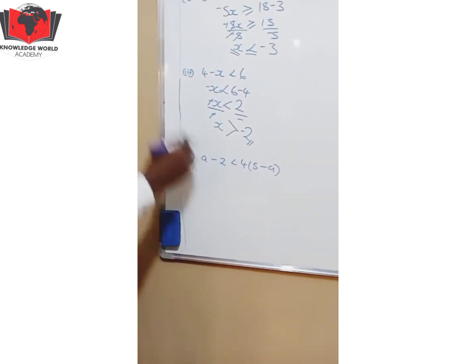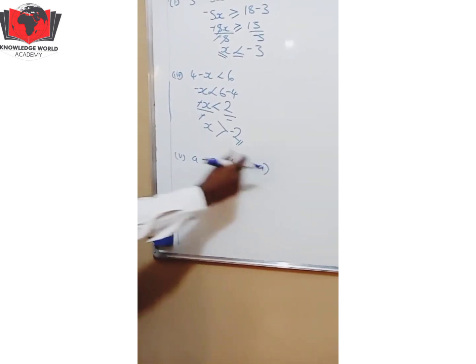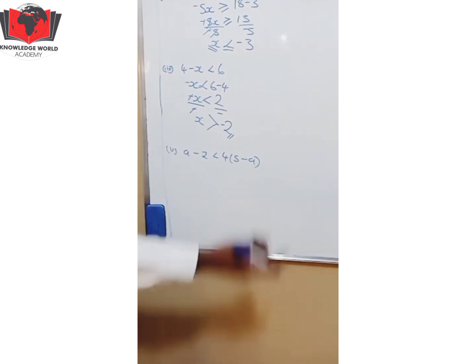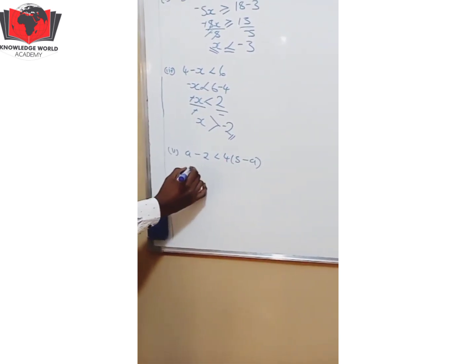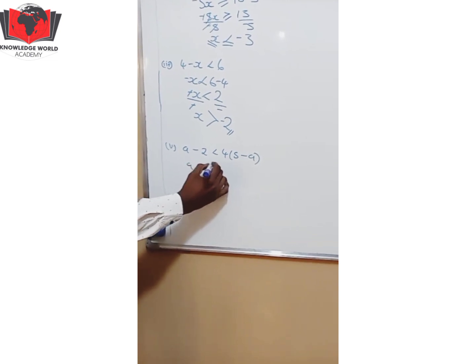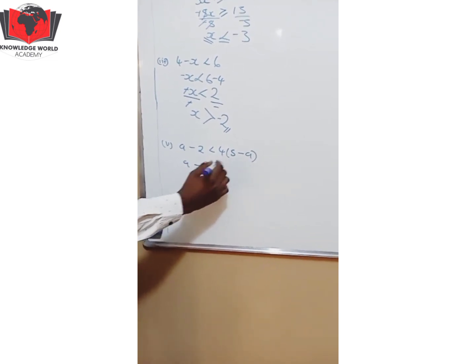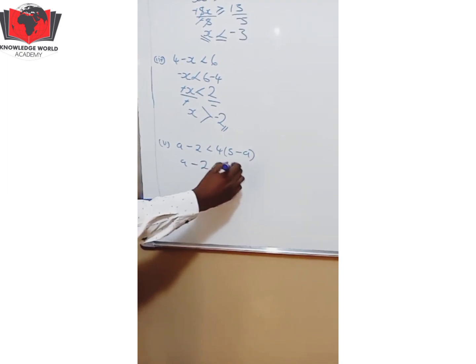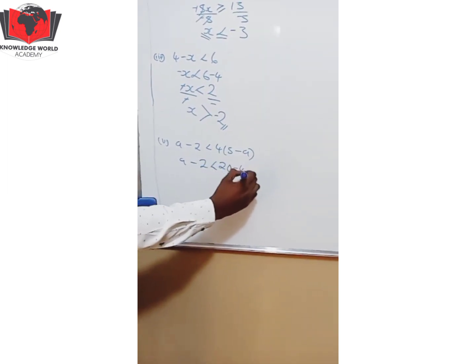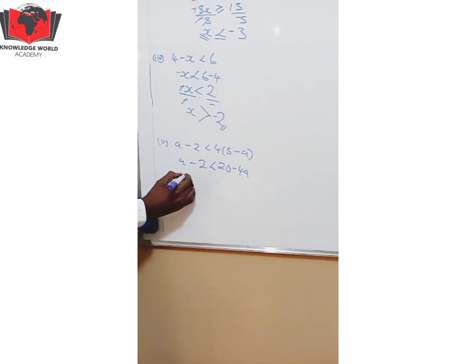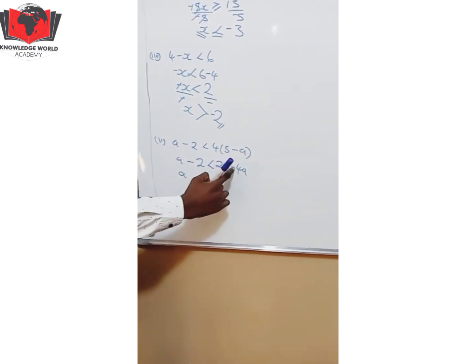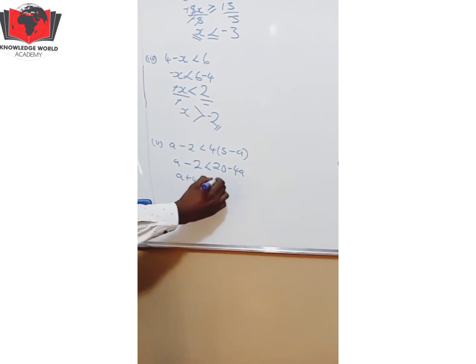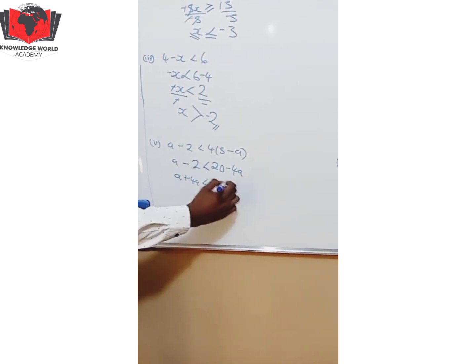A - 2 < 4(5 - A). This is in brackets. And you know that when you have brackets you need to break them. So you have A - 2 < how do you break brackets? By multiplying. So 4 times 5, 20. 4 times -A, -4A. You reach this level you group the like terms. A, -4A goes the other side +4A. Less than 20 goes aside +20.